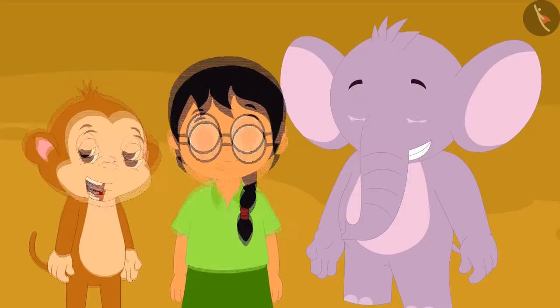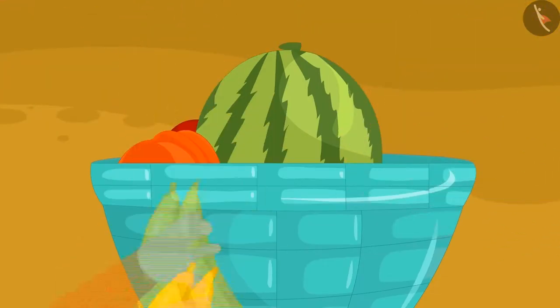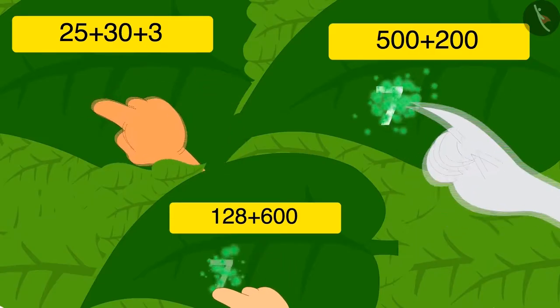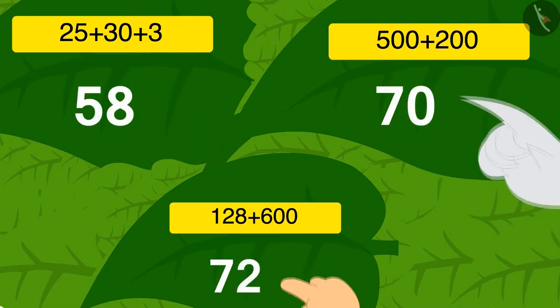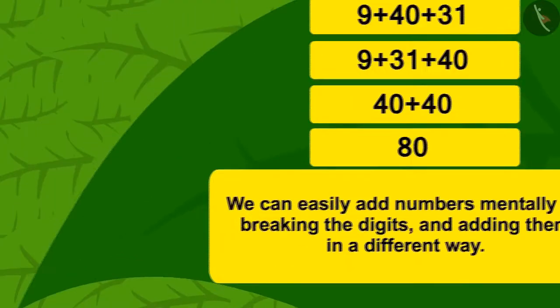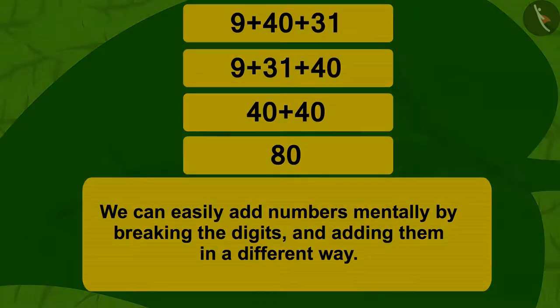The villagers were very happy to see this basket. The villagers got together and ate the eatables which were in the basket, exactly the same way as they had gathered together to find solutions to all the riddles. We saw how we can easily add numbers mentally by breaking the digits and adding them in a different way. In the next lesson, we will see some more interesting examples of this.